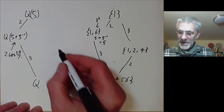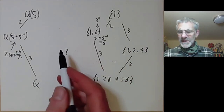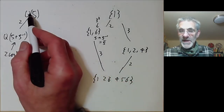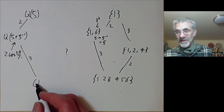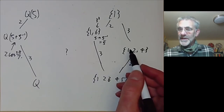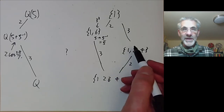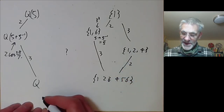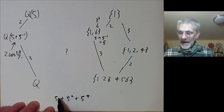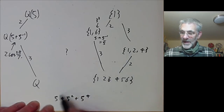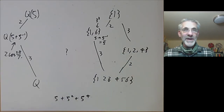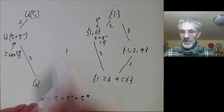There is one other subfield: a degree-2 extension of Q corresponding to the order-3 subgroup {1,2,4}. It is probably not obvious what this field is. To find it, we look for elements fixed by this subgroup. We take α = ζ + ζ² + ζ⁴, obtained by starting with ζ and acting on it by all three elements of the subgroup and summing — this is clearly invariant under the subgroup.